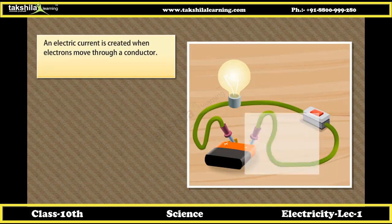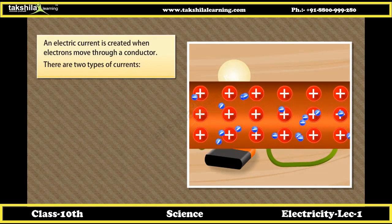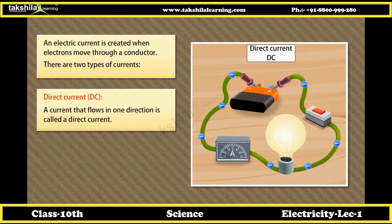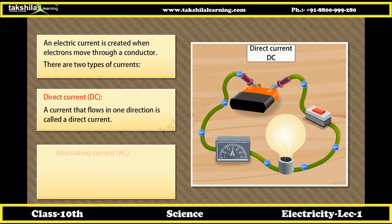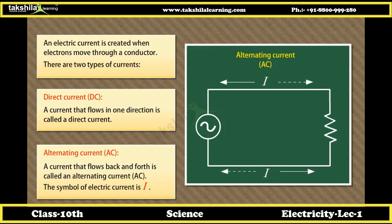An electric current is created when electrons move through a conductor. There are two types of currents. Direct current, or DC — a current that flows in one direction. For example, a battery produces a direct current. Alternating current, or AC — a current that flows back and forth. The symbol of electric current is I.